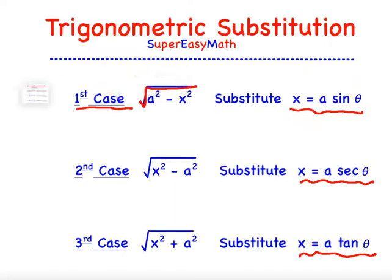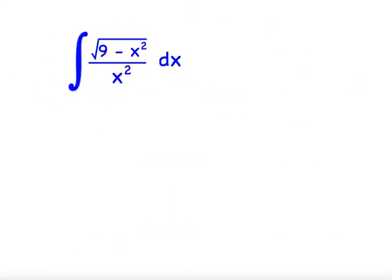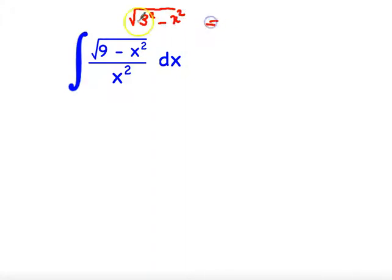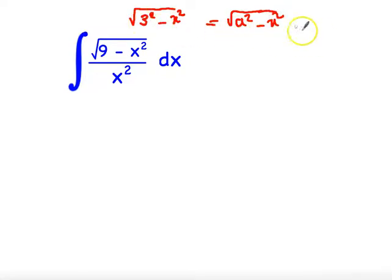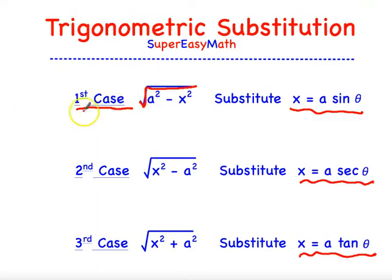So which case is it? We have radical (9 − x²), and since 9 = 3², this is of the form radical (a² − x²) where a = 3. So it's the first case.